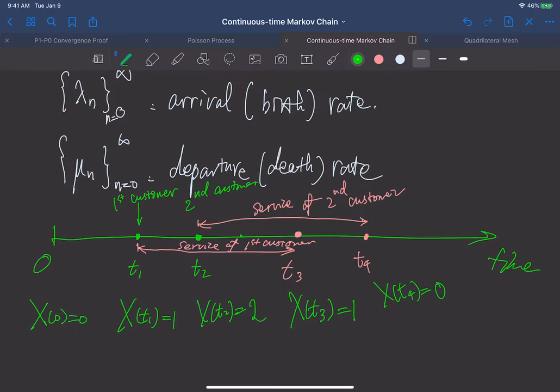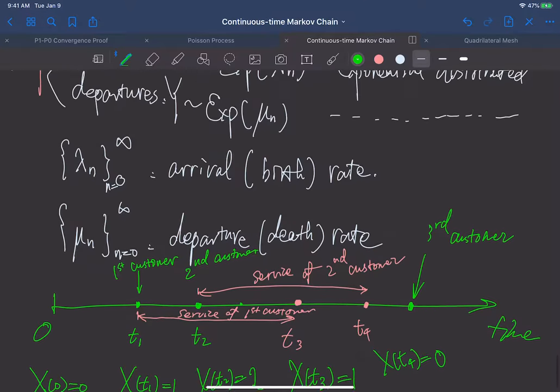And we may have a new arrival. For example, if there is a new arrival, which is our third customer, then, I mean, this continuous Markov chain enters the state of 1 again.